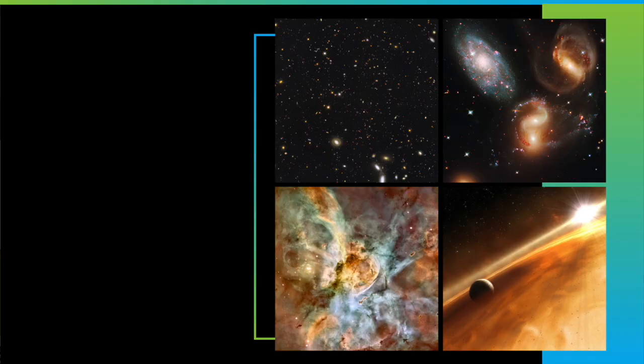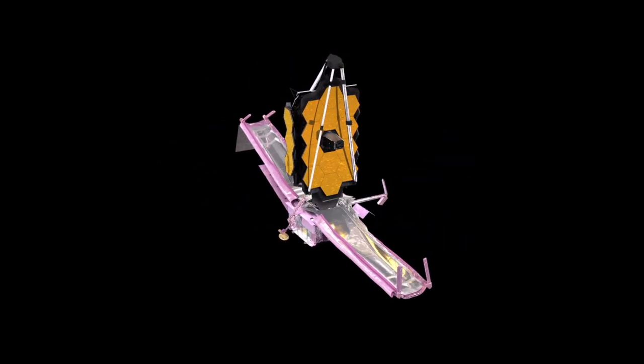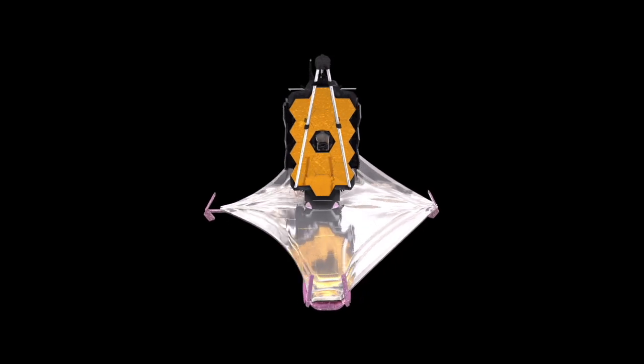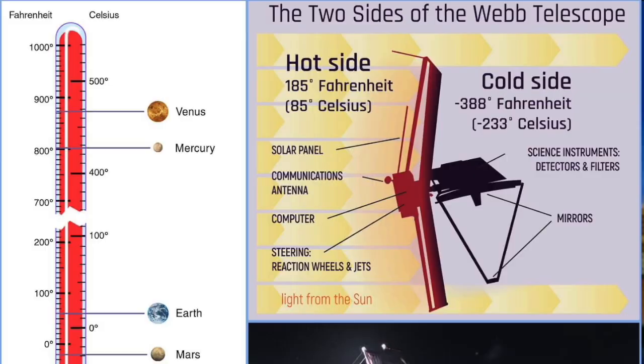This telescope is unique in many other ways, too. Instead of one mirror, it has 18 that were unfolded in space after it took off. Not to mention, it's a large sun shield to keep the glare from the sun off of the sensitive sensors on the telescope.